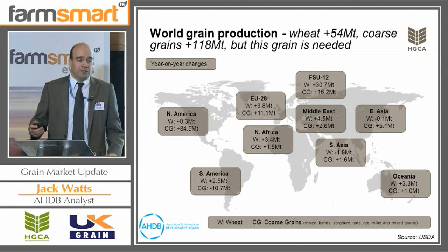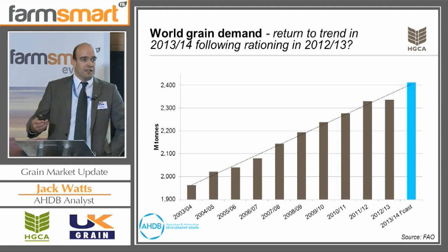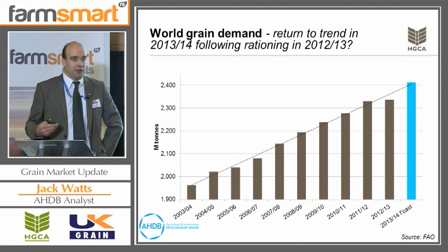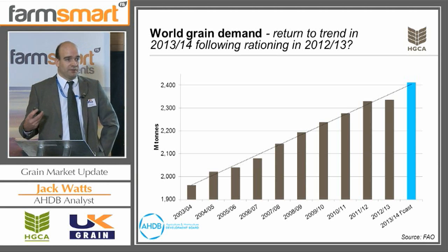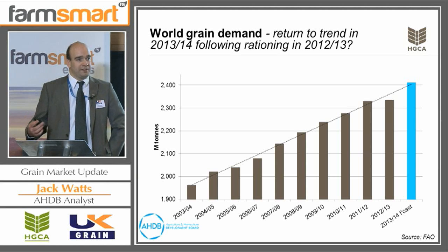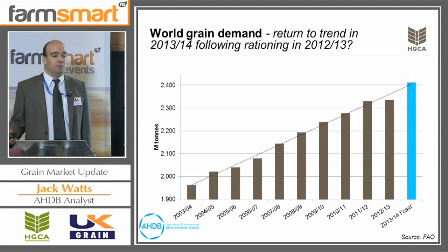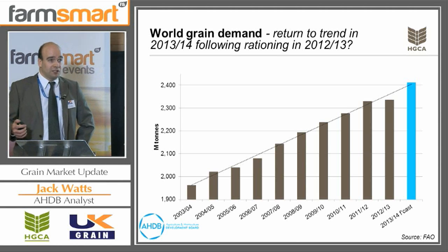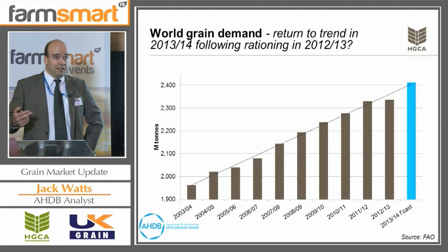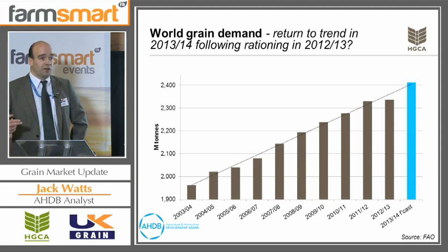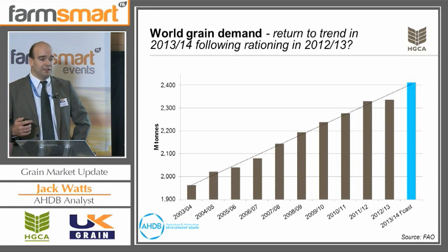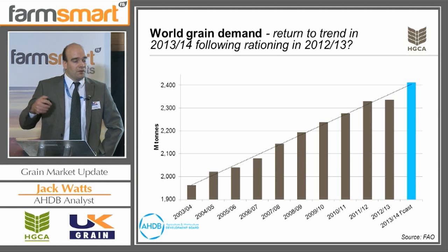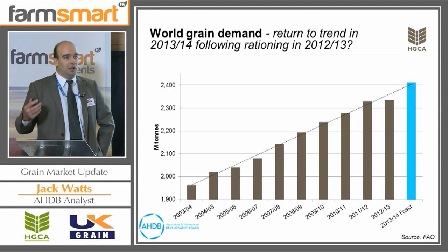Last year was so extreme that if we look at the demand profile, what we've been used to is this general trend upwards in global grain demand, largely led by growing population but also growing wealth in the emerging economies and the demand for feed grains to feed animals to meet the increasing demands of more people wanting essentially a westernized diet. Last season was so extreme that we saw some extreme demand rationing - demand for grain last year was kept level rather than seeing any kind of growth, due to high prices regulating the amount of grain the world could use. For 2013-14, with the increase in global grain production, the world is expecting to see a return to trend in global demand growth.